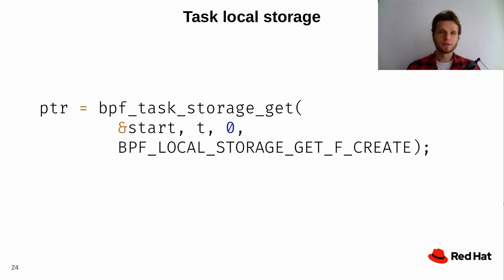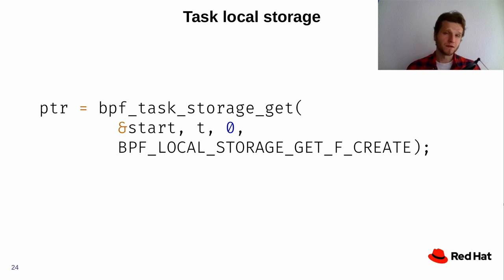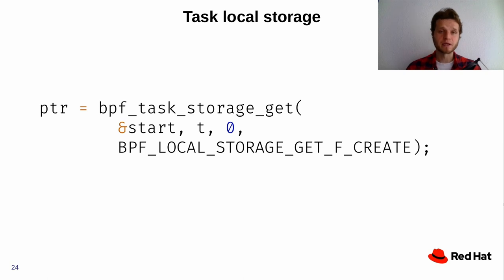Task local storage greatly improves performance — there have been impressive numbers when converting from hash map lookups to task local storage. One minor consideration: the first time you use that local storage it has to be allocated, so if you compare it with pre-allocated hash maps, the very first hit will be slightly slower. After that, access is blazing fast.